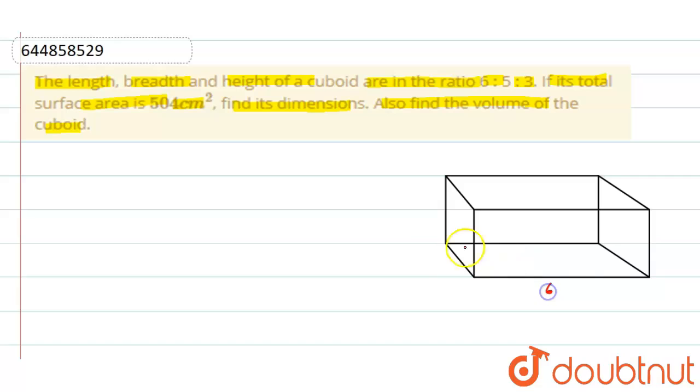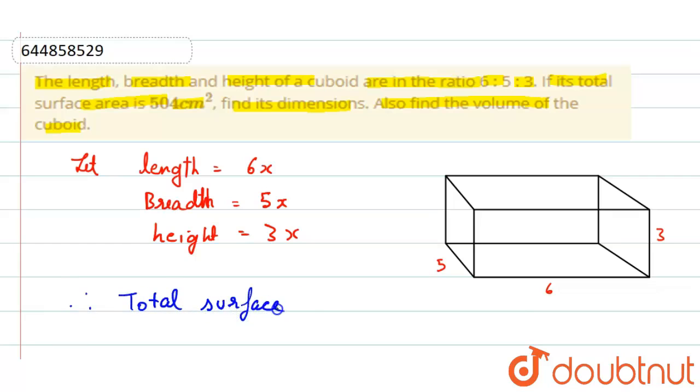whose length is 6 and breadth is 5 and height is 3. So let length be 6x and breadth be 5x and height be 3x. Then we know total surface area. Therefore total surface area formula is what?